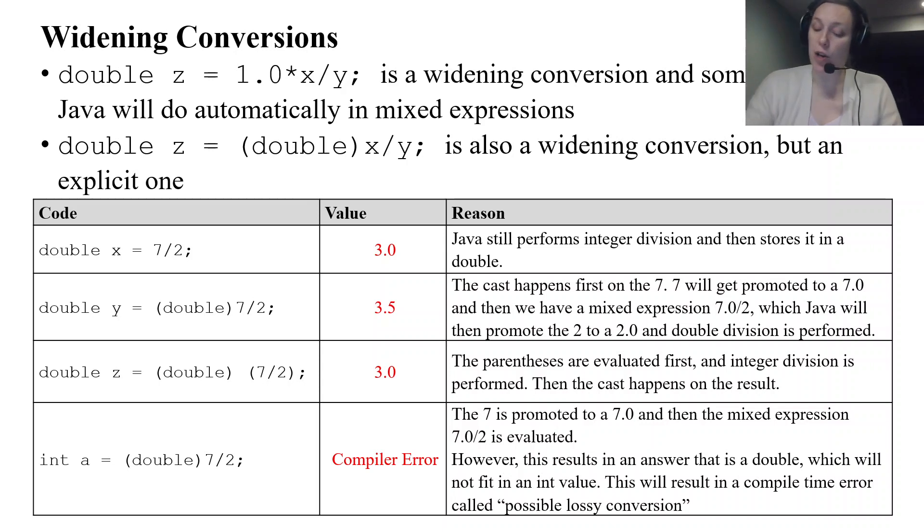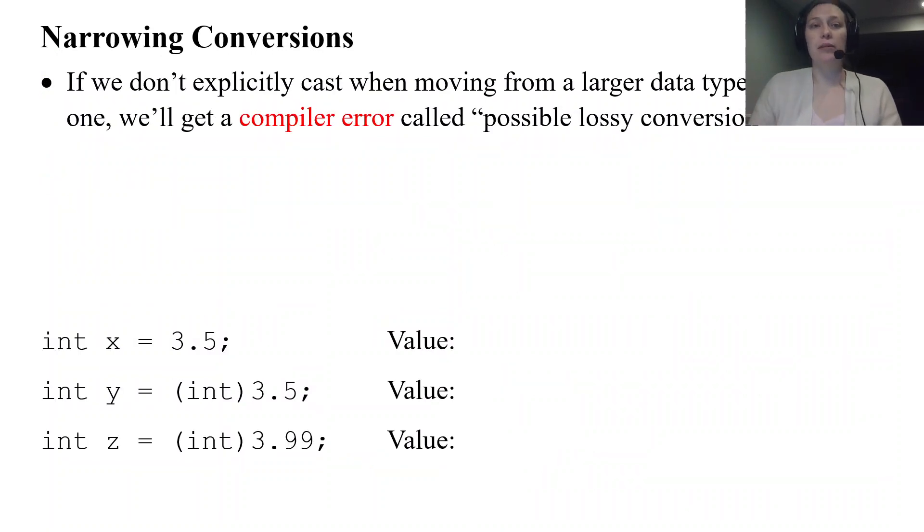But I talked about a narrowing conversion. I talked about how we could fit a double into an integer. And we can, but we have to do it explicitly. There is no implicit narrowing conversion. There's an implicit widening and an explicit widening because widening is something that Java will automatically do. But narrowing is not something Java will automatically do. So you have to be explicit if you want to narrow down.